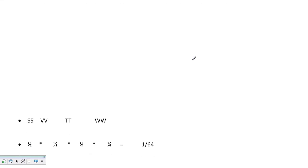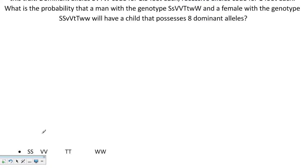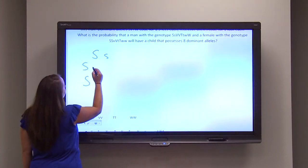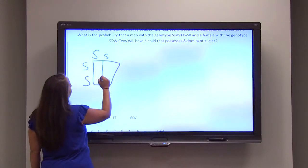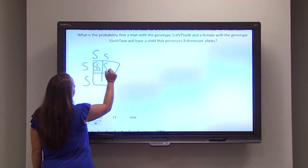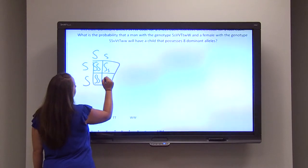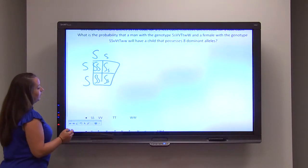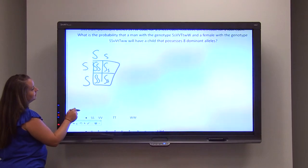The easiest way to do this problem is to look at probabilities. What is the probability that you will get capital S capital S from the first set of alleles? The thing to do once again is turn to Punnett squares. We have the man and we have the woman. When you run the Punnett square together, there is a one-half chance that we will get all dominant traits from just that one combination.